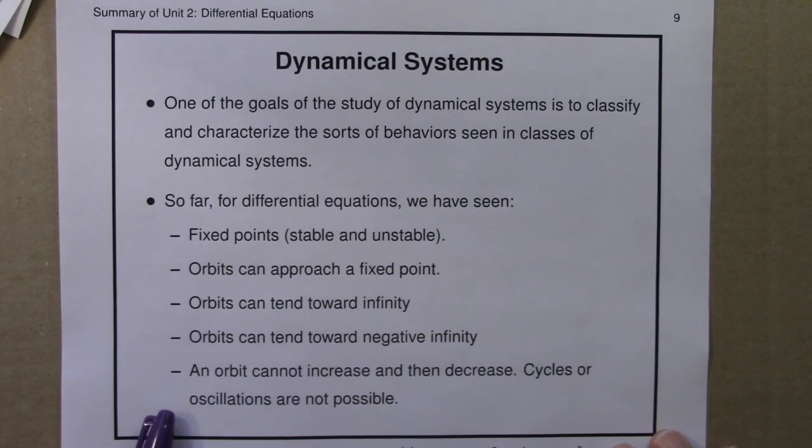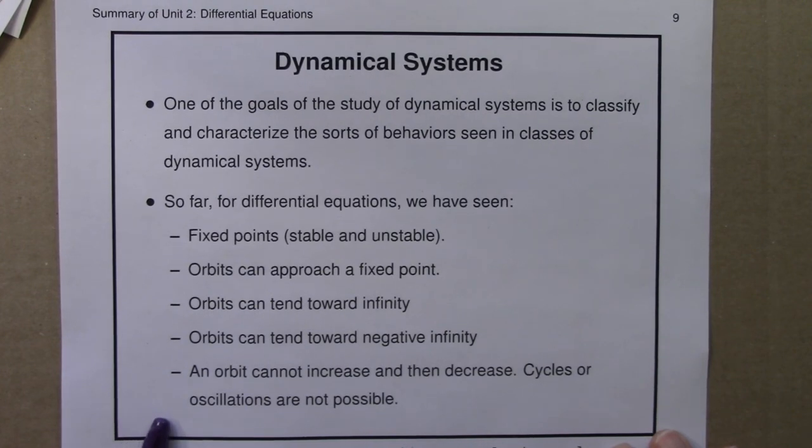And additionally, an orbit cannot increase and then decrease. Its rate of change is only a function of x, its value. So that means that cycles or oscillations are not possible.